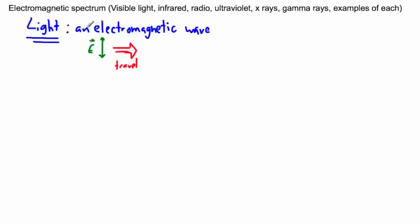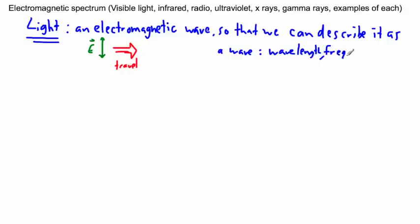This is how light works, or at least how light can be described. Because light is an electromagnetic wave, we can describe it as a wave. Which means we have things like wavelength, frequency, and speed. We can use this equation, V equals F lambda, the wave equation.